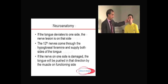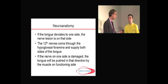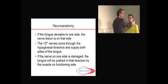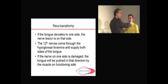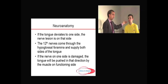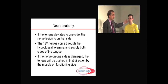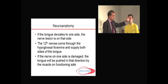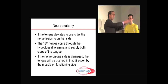For example, if Donica sticks out his tongue and it deviates to the right-hand side — the 12th nerves come from the hypoglossal foramina and supply both sides of the tongue. So if Donica damaged his right 12th nerve at nuclear level, at foraminal level or elsewhere, then the nerve supply into the right side of his tongue is lost. When he goes to stick out his tongue, it will deviate to the side of the lesion because it's pushed over by the functioning left-hand side.